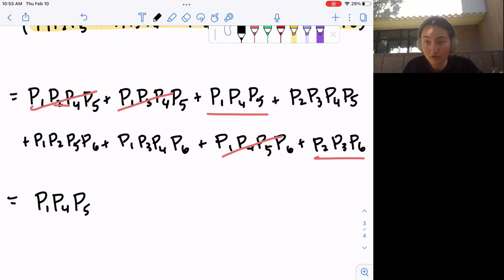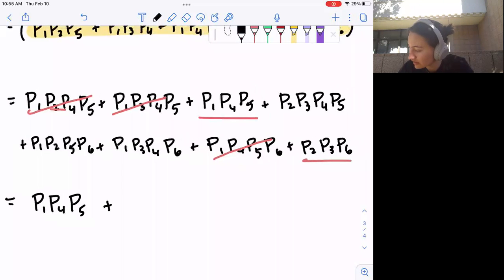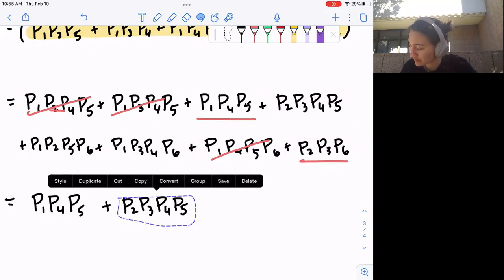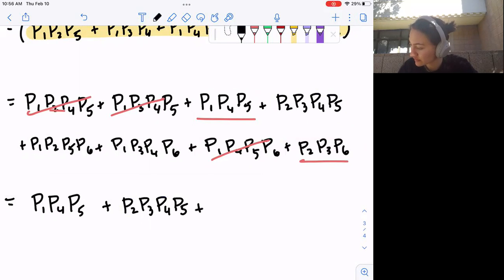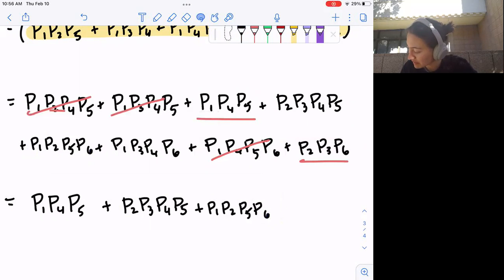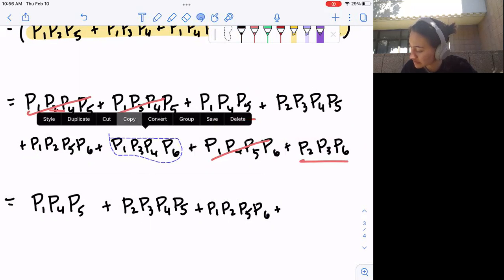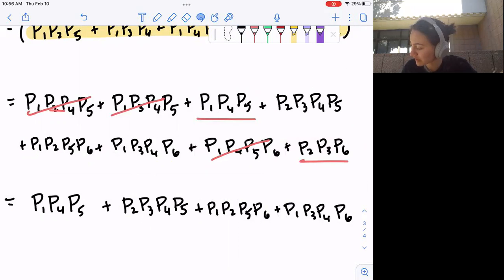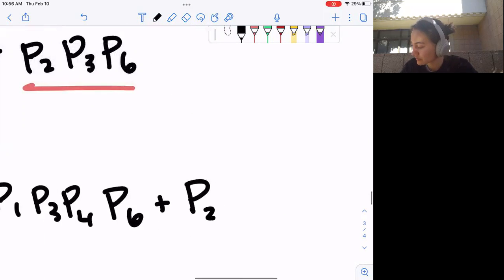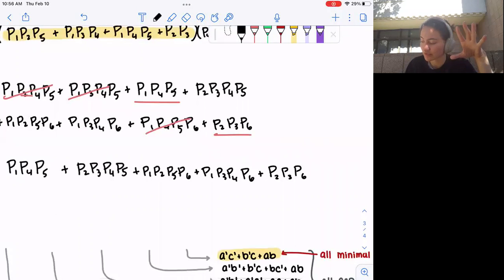I'm just going to do this because I am lazy, P2 P3 P4 and P5 will cover all of your minterms. P1 P2 P5 P6, all those prime implicants will cover all of your minterms. Same thing with this combination here. Prime implicant 1 plus prime implicant 3, prime implicant 4, and prime implicant 6 will cover all of your minterms. And last but not least, P2 P3 and P6 will cover all of your minterms.